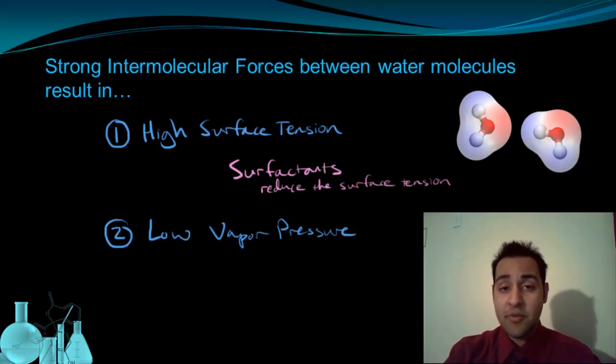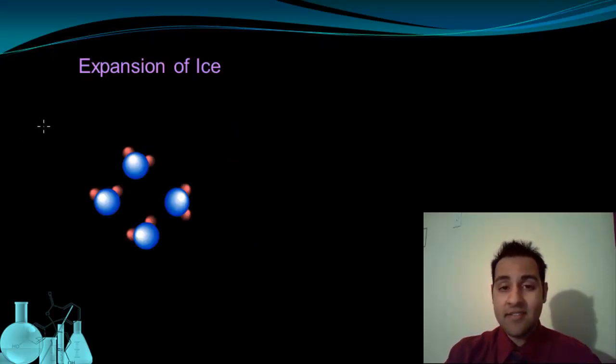There's one more property we're going to look at for water, and that's the expansion of ice. So we know we can form ice by lowering the temperature of water. Now for most liquids, when you lower the temperature, the kinetic energy goes down, which means the molecules are moving less, they take up less space, and ultimately the molecules get closer together.